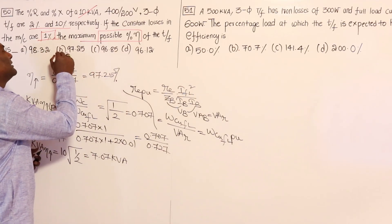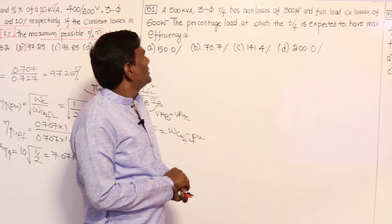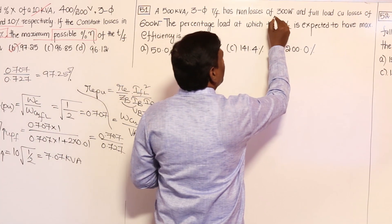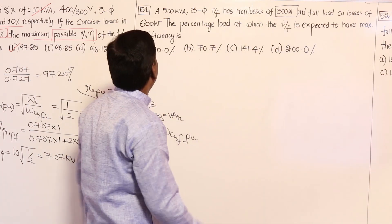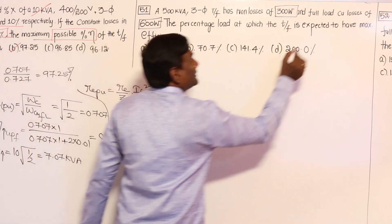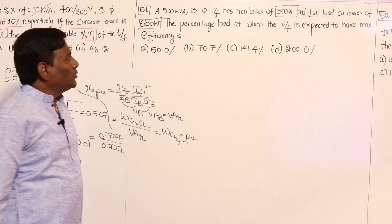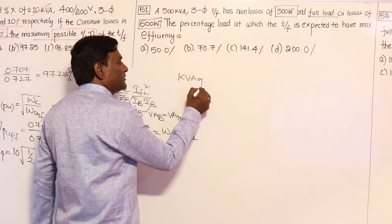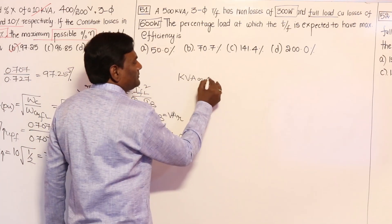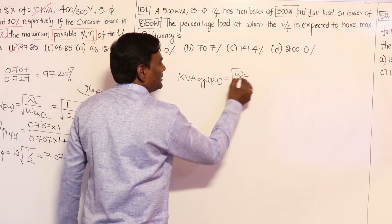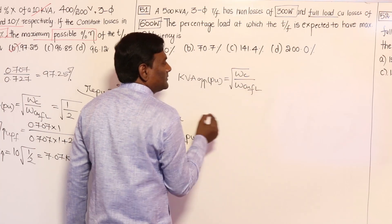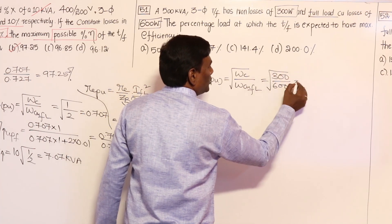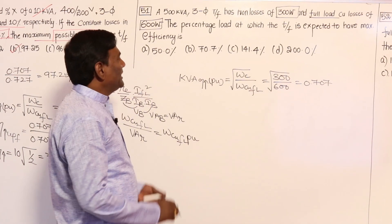Now let us take one more question. A 500 KVA three-phase transformer has an iron loss of 300 watts and a full load copper loss of 600 watts. We need to find the percentage of load at which maximum efficiency is expected. KVA at maximum efficiency in per unit equals the square root of core loss divided by full load copper loss, which is the square root of 300 divided by 600, giving 0.707 — so maximum efficiency occurs at 70.7 percent of rated KVA.